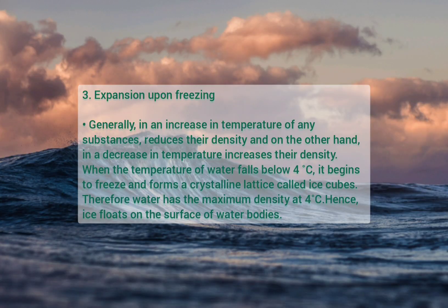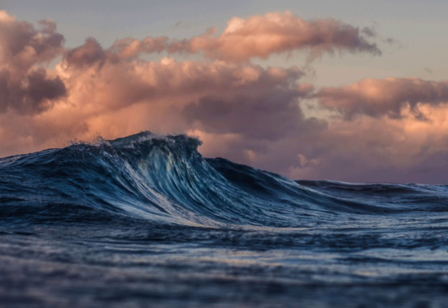Three — expansion upon freezing. Generally, an increase in temperature of any substance reduces its density, and a decrease in temperature increases its density. However, when the temperature of water falls below 4°C, it begins to freeze and forms a crystalline lattice called ice. Therefore, water has its maximum density at 4°C. Hence, ice floats on the surface of water bodies. This is an important property of water in polar regions, where organisms in aquatic bodies can survive during winter.